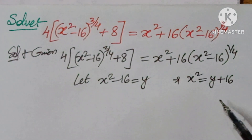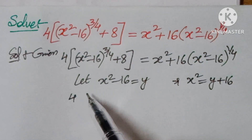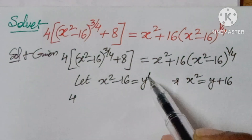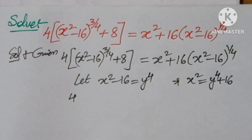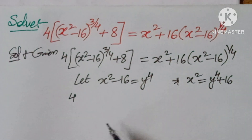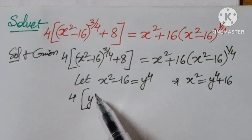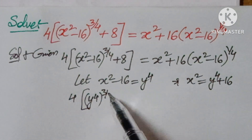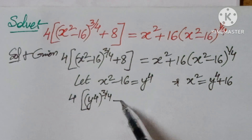Now replace this value in the equation. Note that x squared minus 16 equals y, so we write it as y to the power of 4 in appropriate form. We get 4 into y to the power of 4, raised to the power of 3/4.